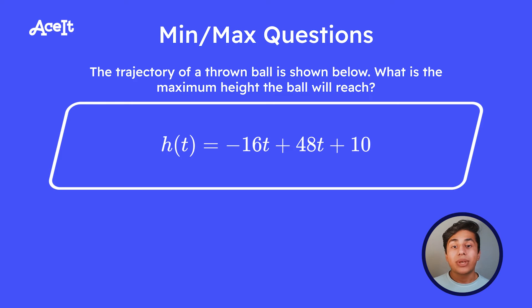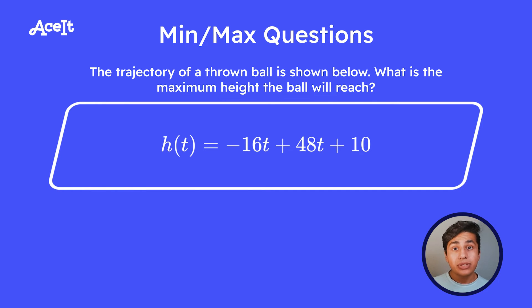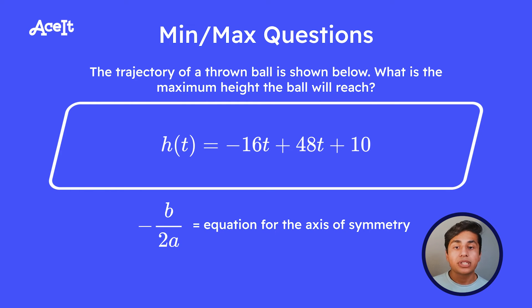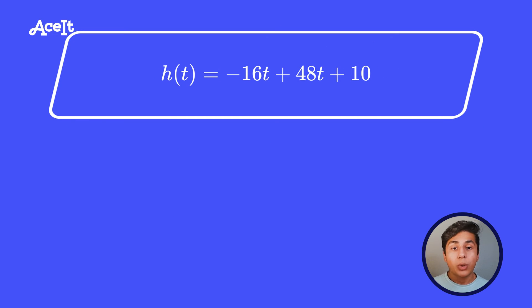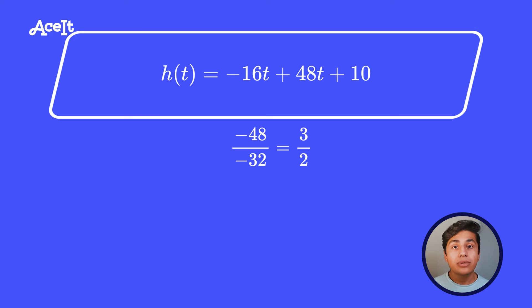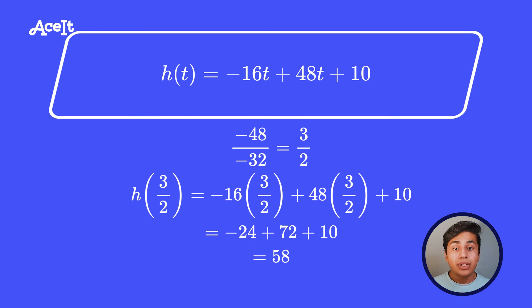The last topic I wanted to cover is minimums and maximums. Typically you'll see this in SAT physics problems where an object is thrown and you're asked to find the maximum height it will reach. For a parabola, the maximum height is at the point on the axis of symmetry. You take negative B over 2A, where A and B are coefficients, and plug that into your function to find the maximum height. In this example, B is 48 and A is negative 16, giving us negative 48 over negative 32, or 3/2 when simplified. Plugging 3/2 in as t, we get a maximum height of 58.